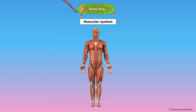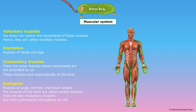Muscles are of different types. Voluntary muscles are muscles whose movements our brain can control. Hence, they are called voluntary muscles. Examples include muscles of the hands and legs.